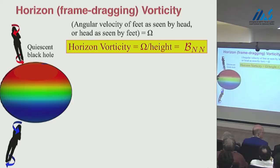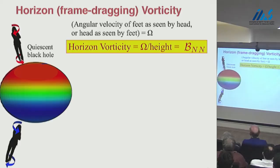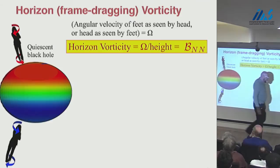I color the horizon by the strength of the normal component of the frame-drag field, which has the physical meaning of this differential frame-dragging she experienced. The northern hemisphere of the black hole is red — a gyroscope at her feet is dragged counterclockwise relative to the one at her head. It's similar to wringing out a wet towel: if your left hand sees your right hand going counterclockwise, then your right hand sees your left hand going counterclockwise. In the south polar region, it's a clockwise twist in frame-dragging.